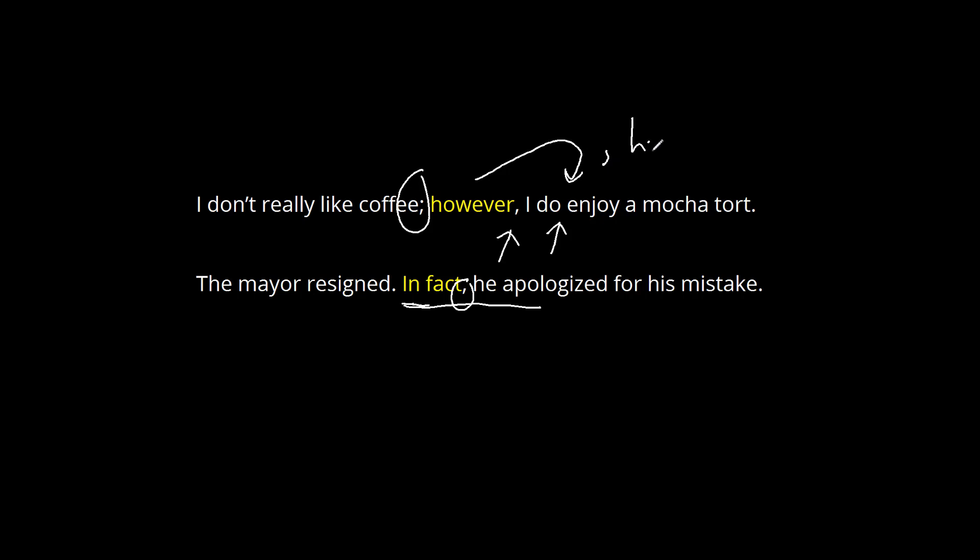So your most common ways of punctuating a conjunctive adverb are: stick it at the beginning of a sentence followed by a comma; stick it after a semicolon followed by a comma; or have it a little bit later in the clause, surrounded by commas. I should mention one thing though — you don't always have to put commas around the conjunctive adverb. If it runs quite smoothly to say 'I do however enjoy a mocha torte' with no commas, that's quite alright too. So those are your options for punctuating conjunctive adverbs.